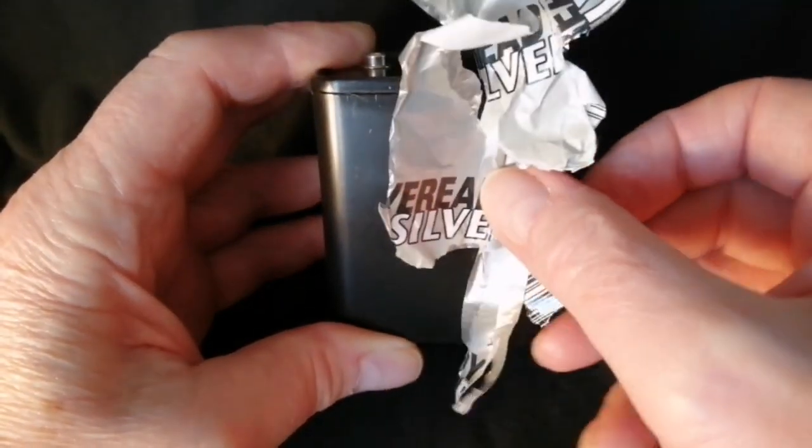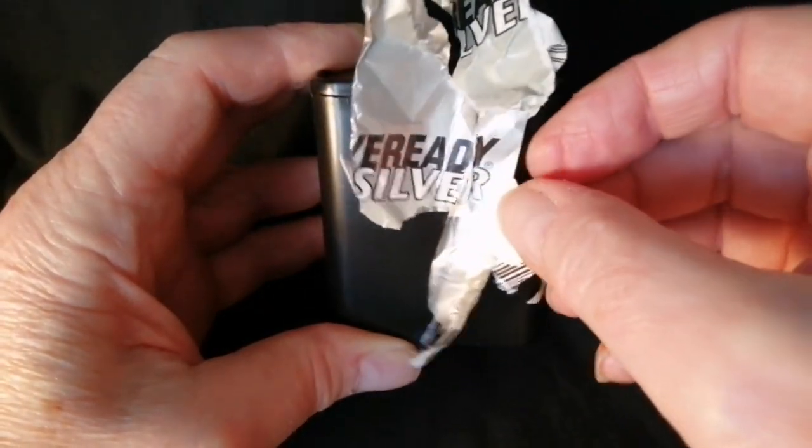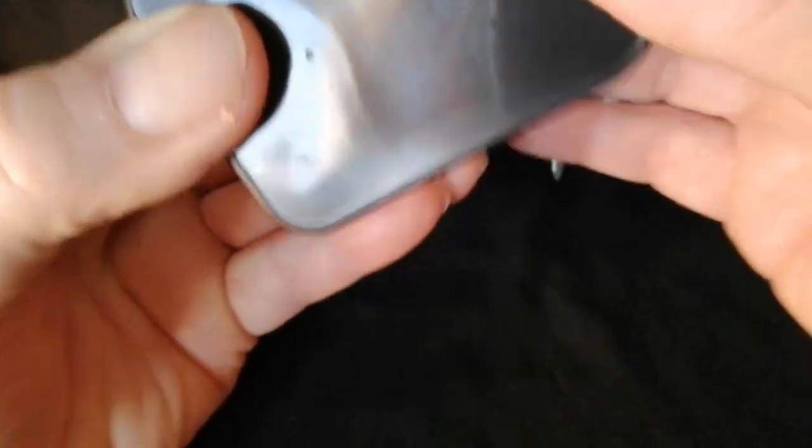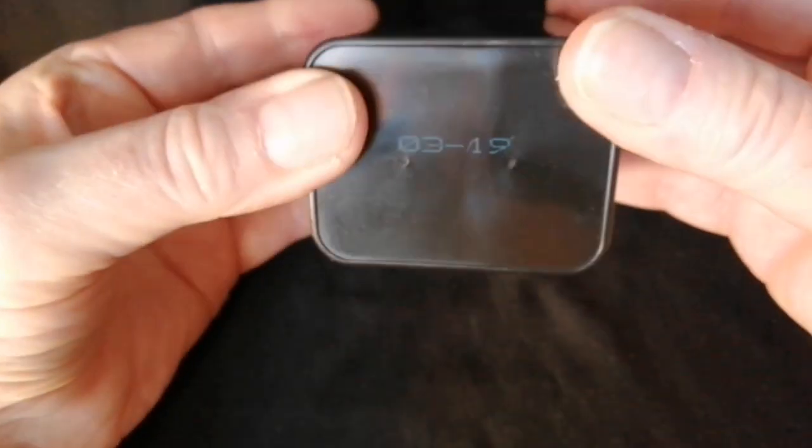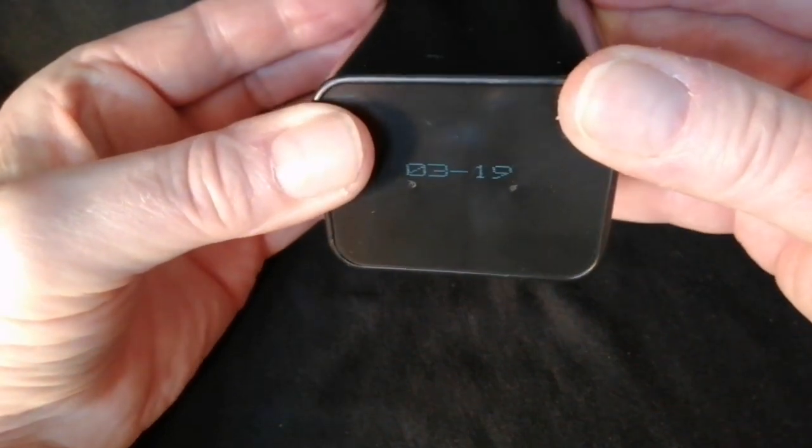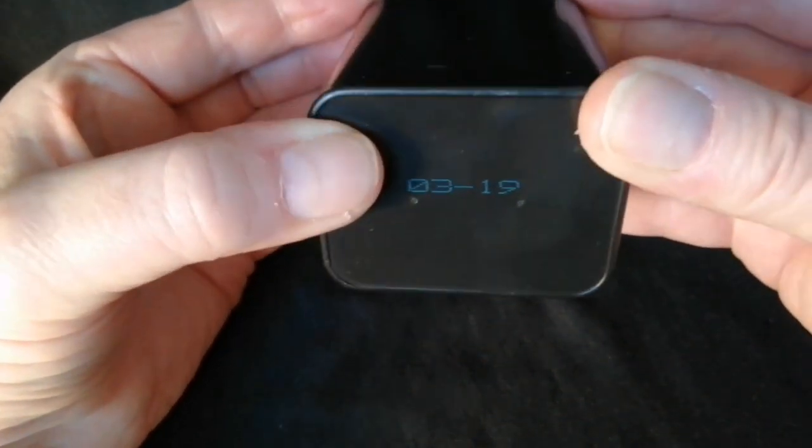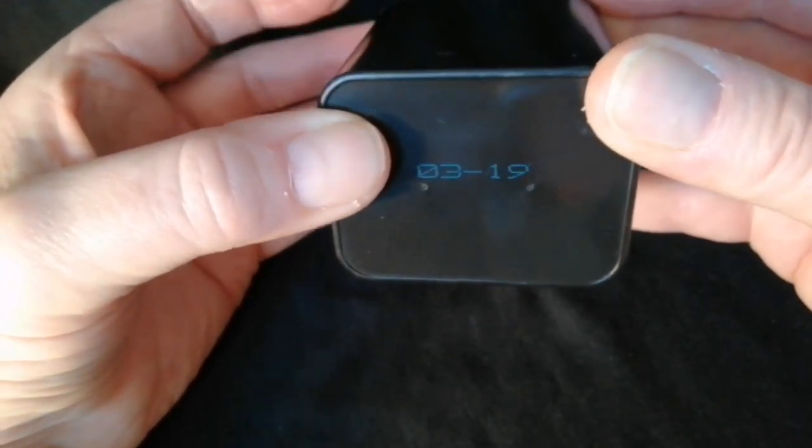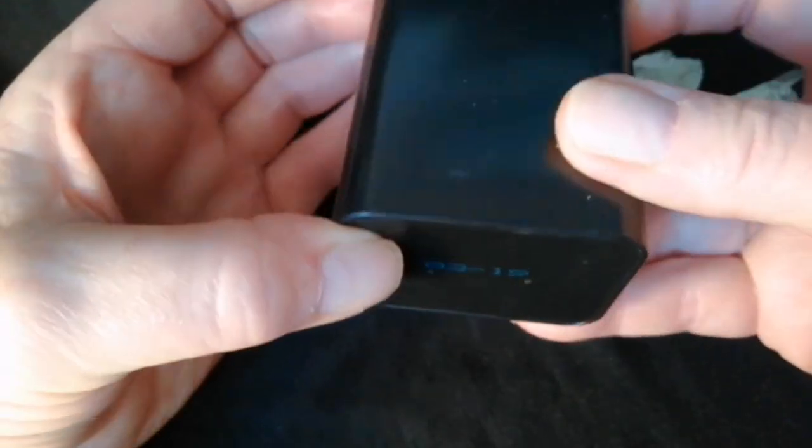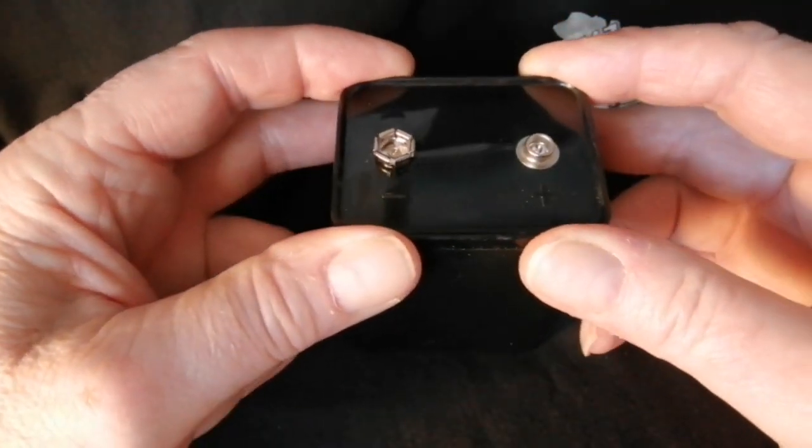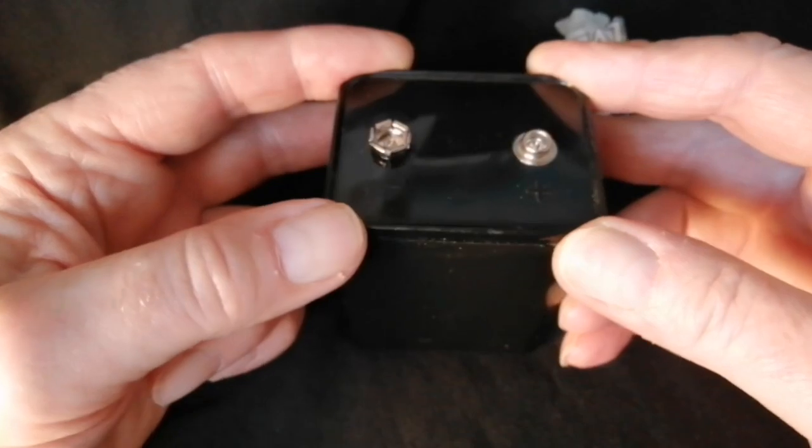I ripped off the label but it was an Ever-Ready Silver and it had an expiry date of 03.19 and it's now 01.22 so it's well past its expiry date but I thought let's have a look at this and see what's inside it.